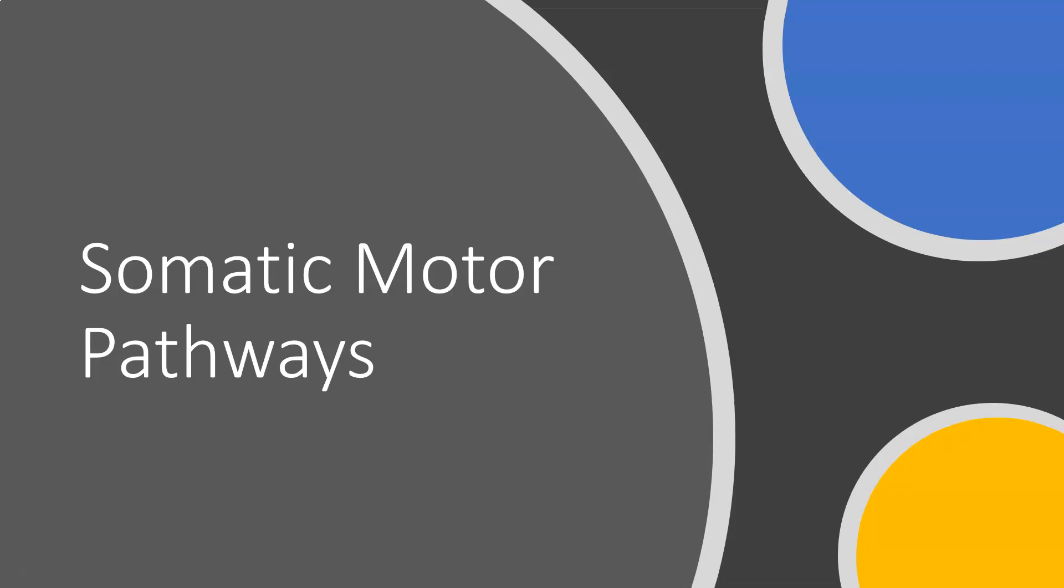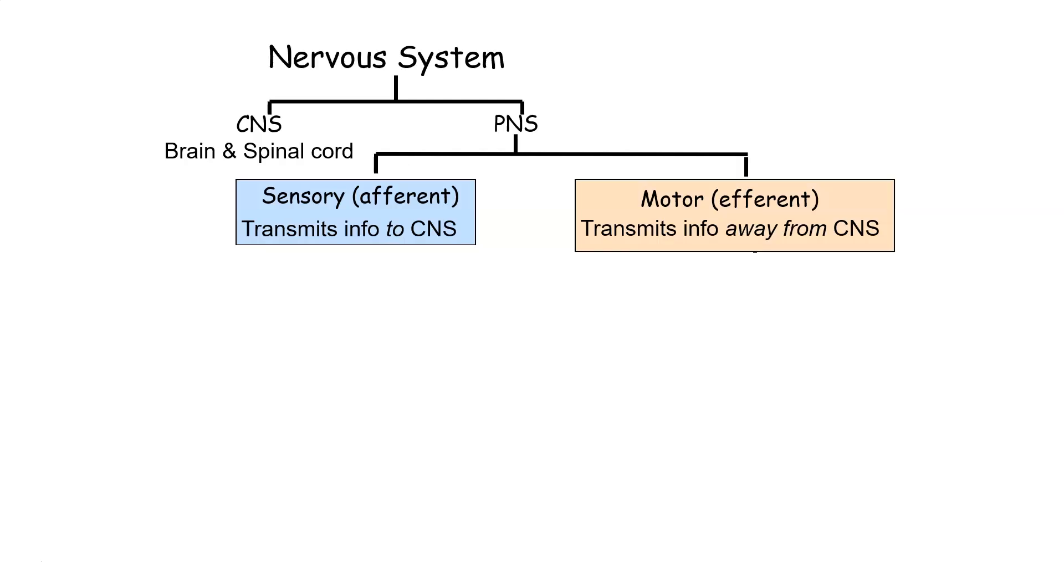So let's take a look at what we've learned so far. Previously, we learned about the divisions within the nervous system of the central nervous system and the peripheral nervous system. In the central nervous system, we have our brain and our spinal cord, and we've already gone over the mechanisms of how these neurons communicate with one another. You've also learned that neurons with specific functions are compartmentalized in certain locations within the CNS.